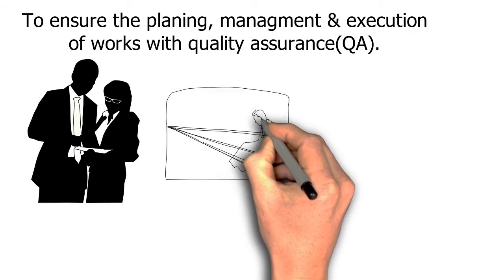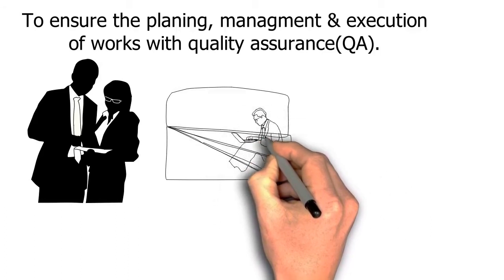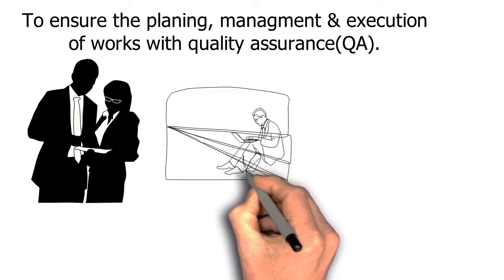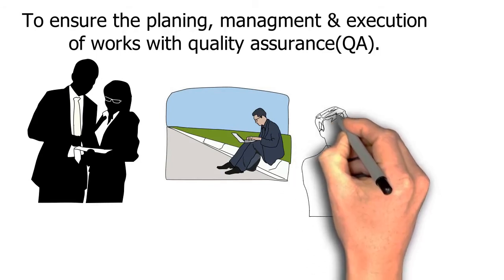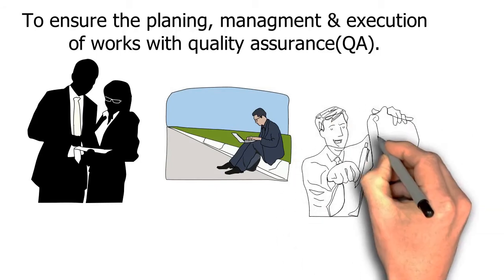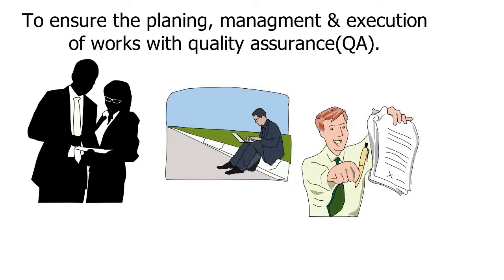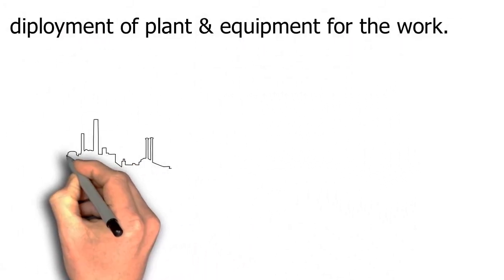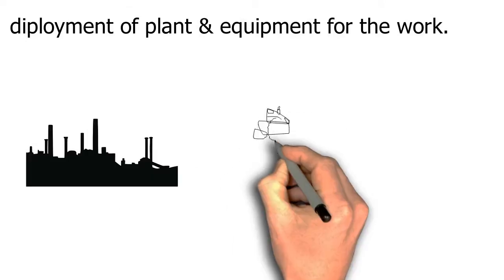The QA plan is submitted to the engineer for approval not later than 28 days from the date of signing of the contract agreement. The contractor provides all information to the satisfaction of engineers to ensure its adequacy for the deployment of plants and equipment.